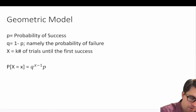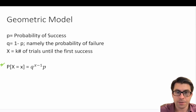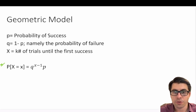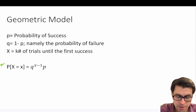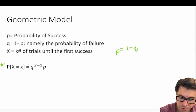So this right here is our probability model. The probability that x is equal to some specified number of discrete events is equal to q — that is, our probability of failure — to the power of x minus 1, where x is our first success on our nth trial, times p, the probability of success. Importantly, p is equal to 1 minus q, and q is equal to 1 minus p.